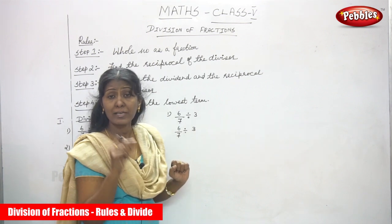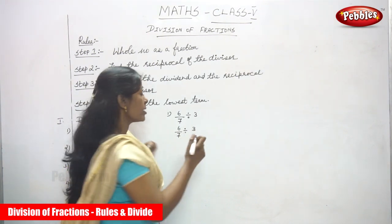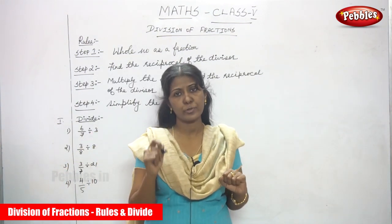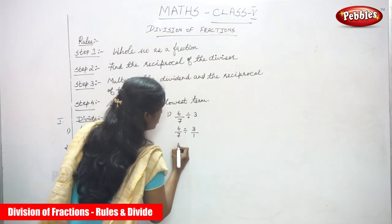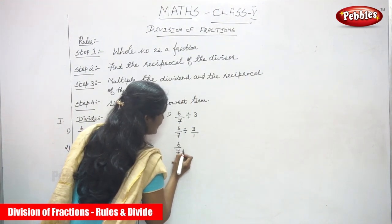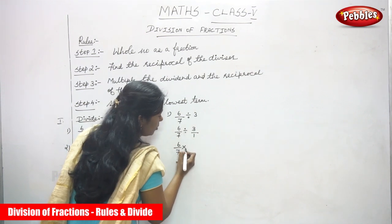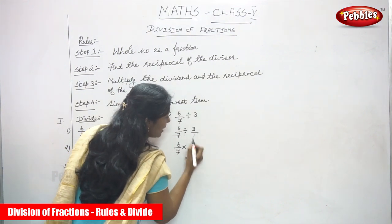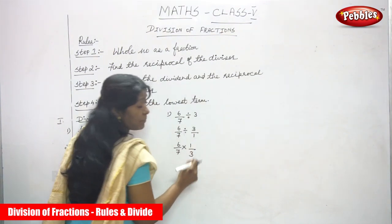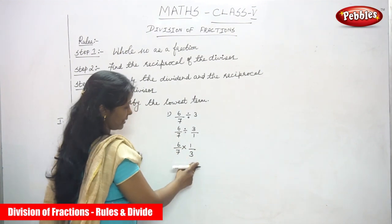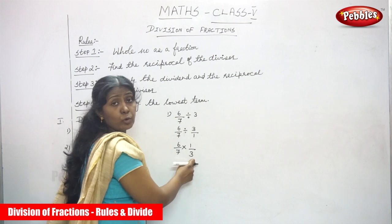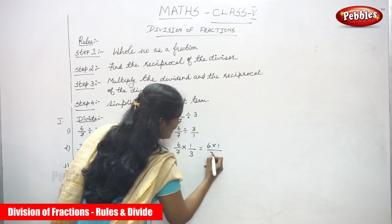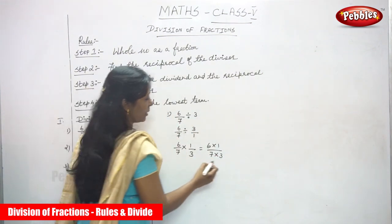Since 3 is a whole number, we convert it to a fraction: 3 divided by 1, because if there is no denominator, we consider 1 as the denominator. So we have 6/7 as the dividend and 3/1 as the divisor. Now find the reciprocal of the divisor: 3/1 becomes 1/3 — that is upside down. Now multiply the dividend and the reciprocal of the divisor: 6 × 1 over 7 × 3.